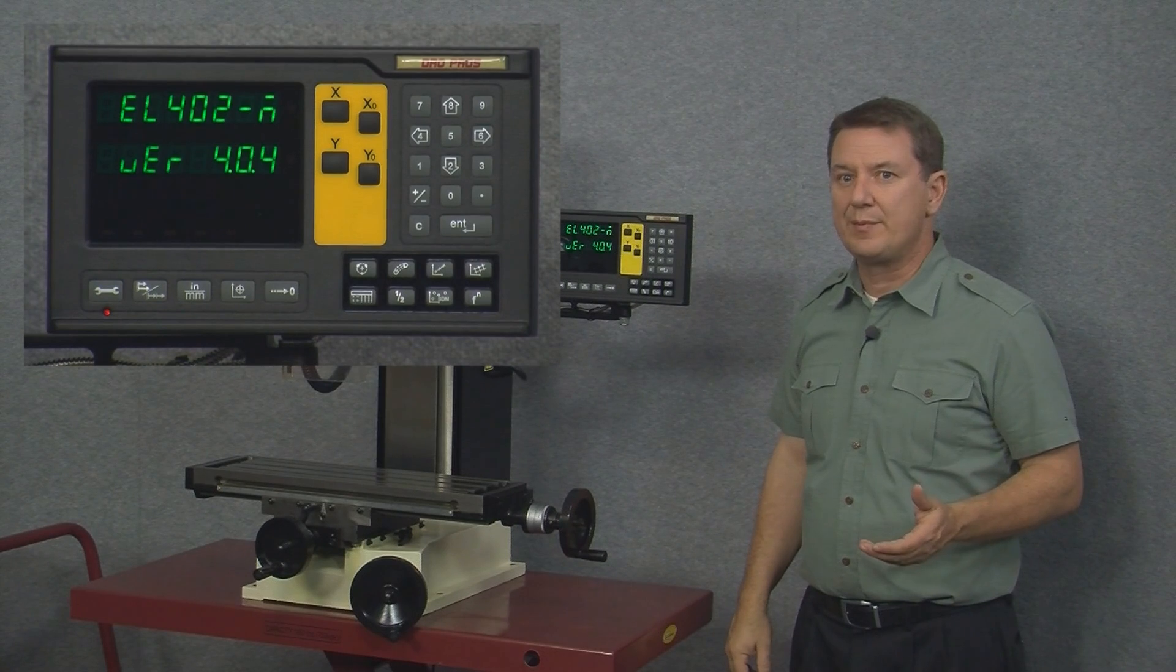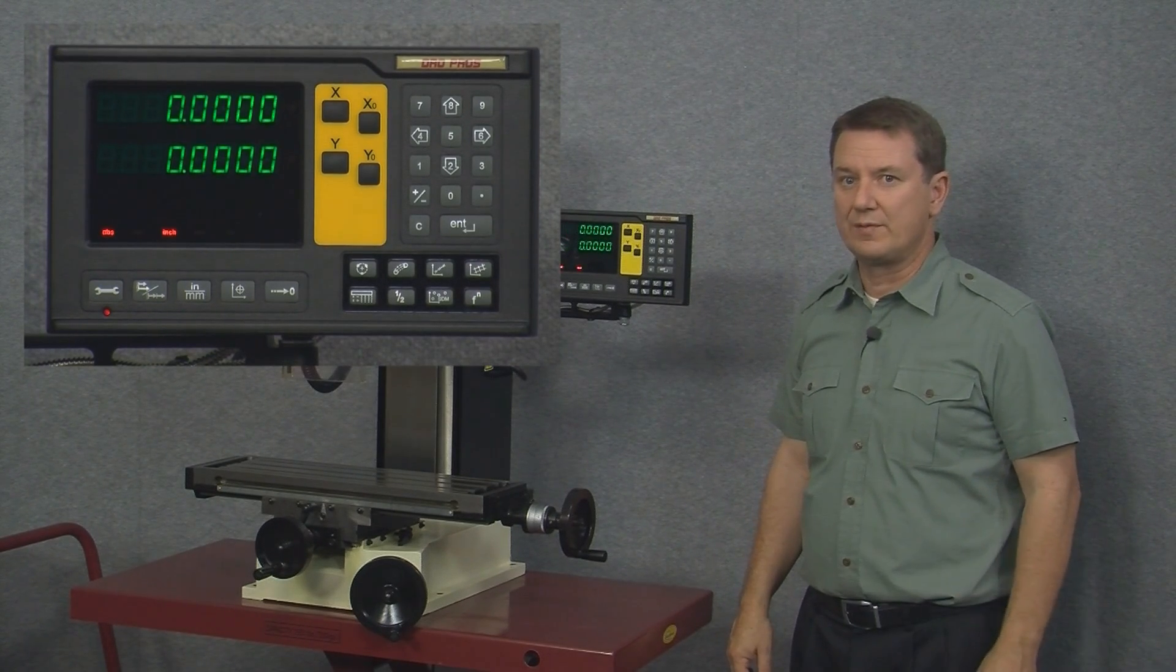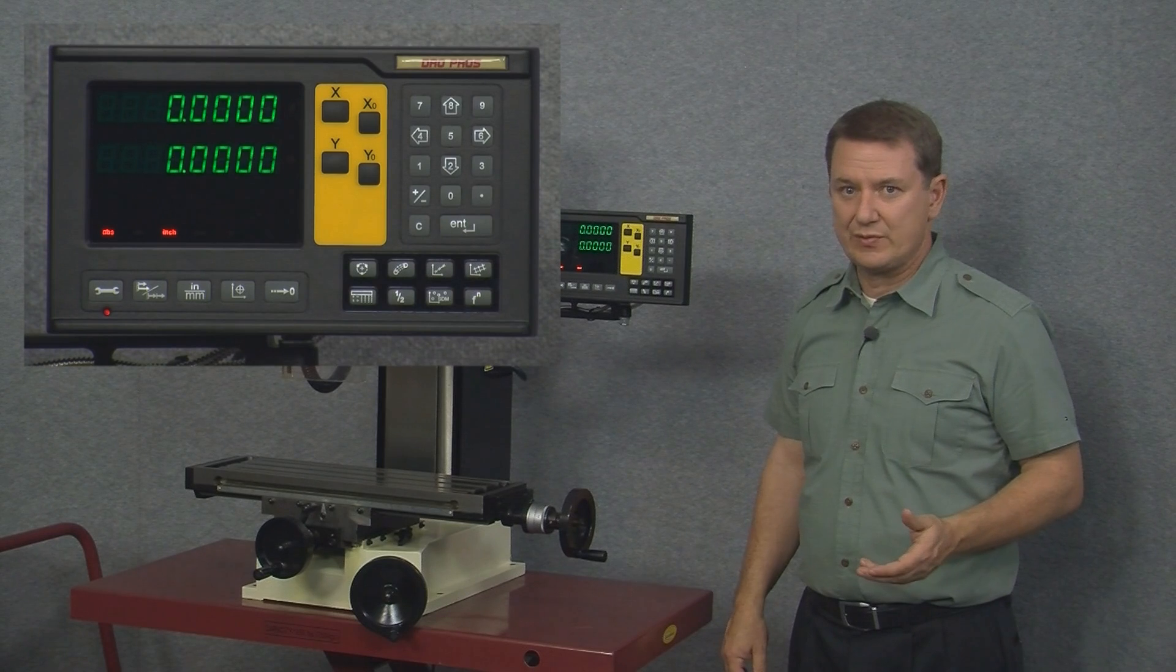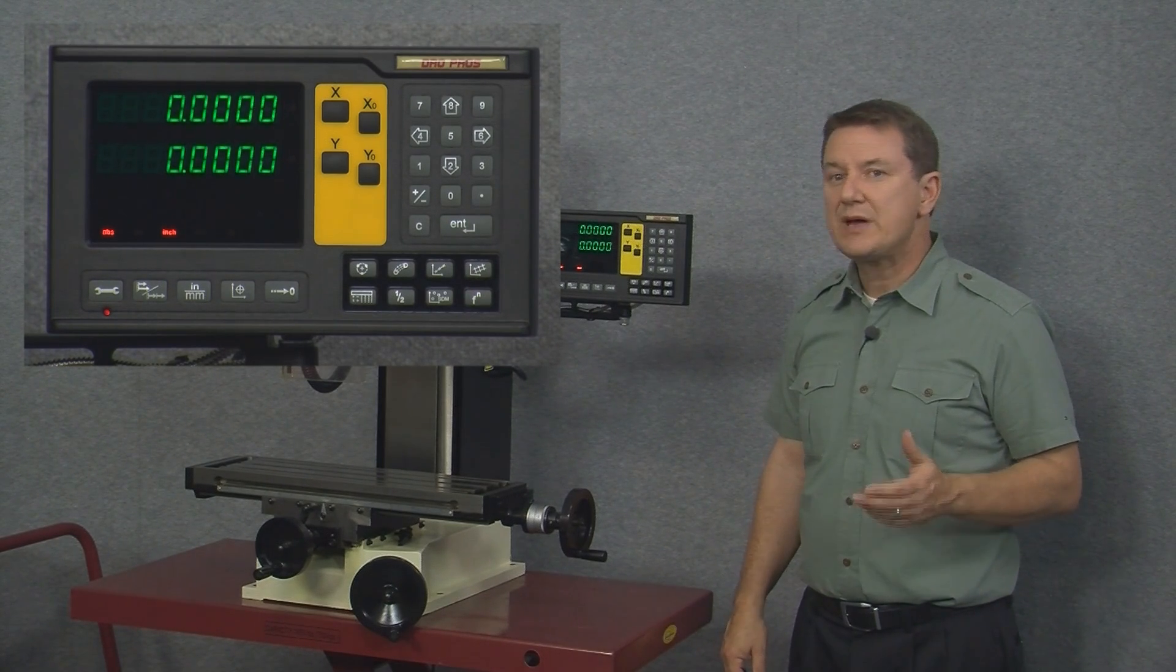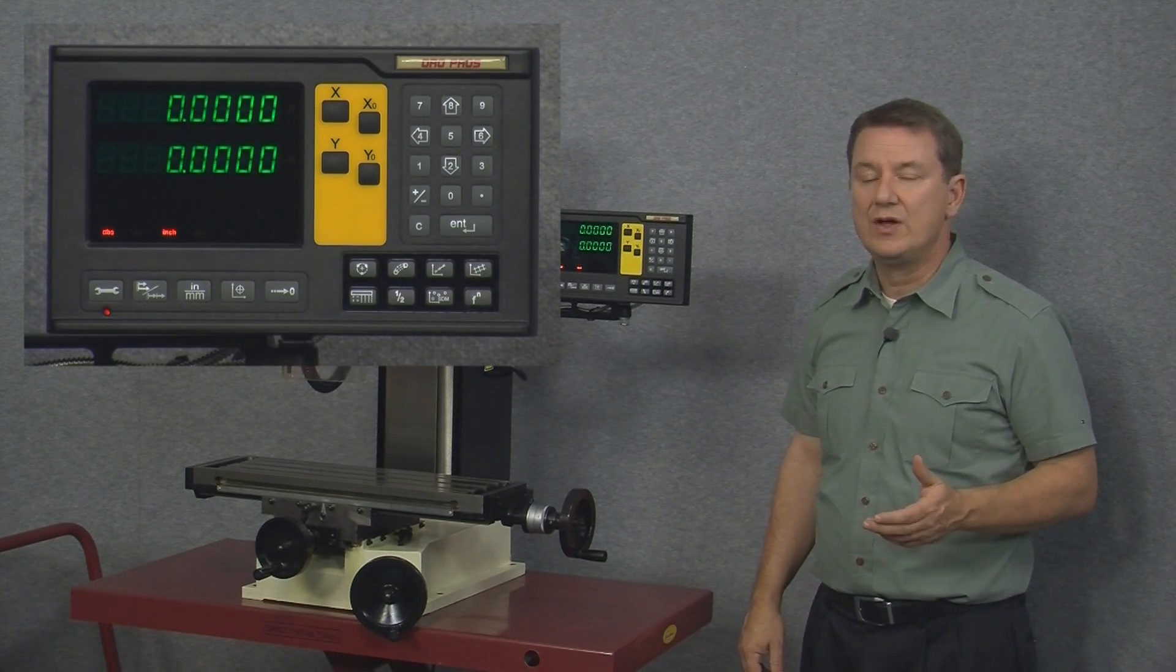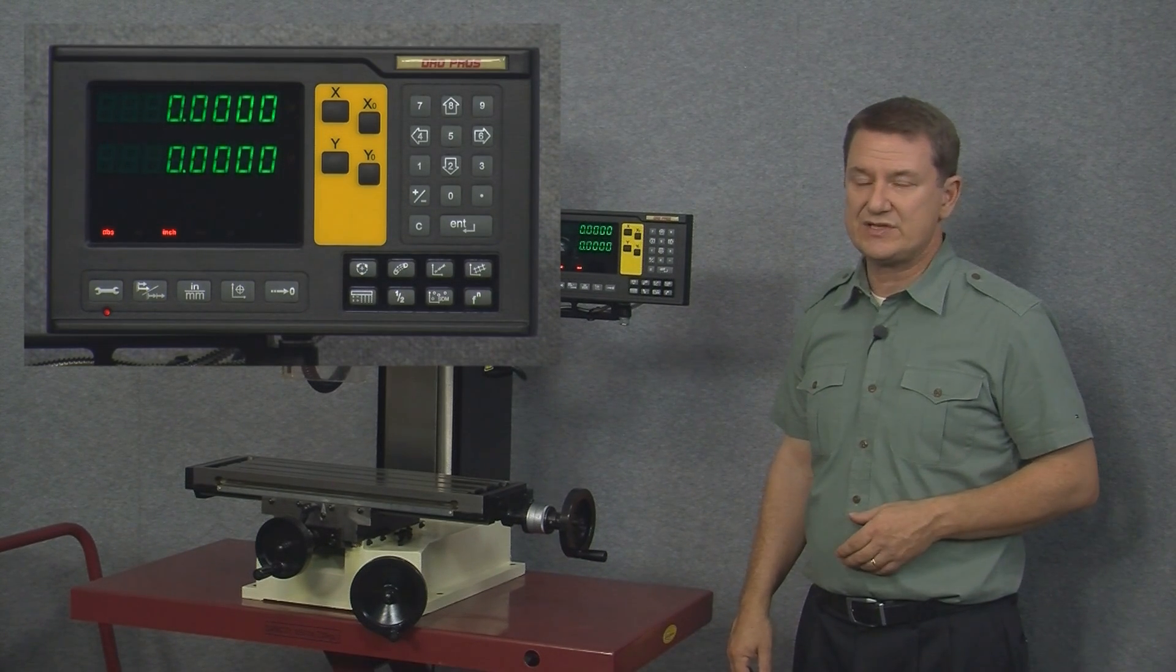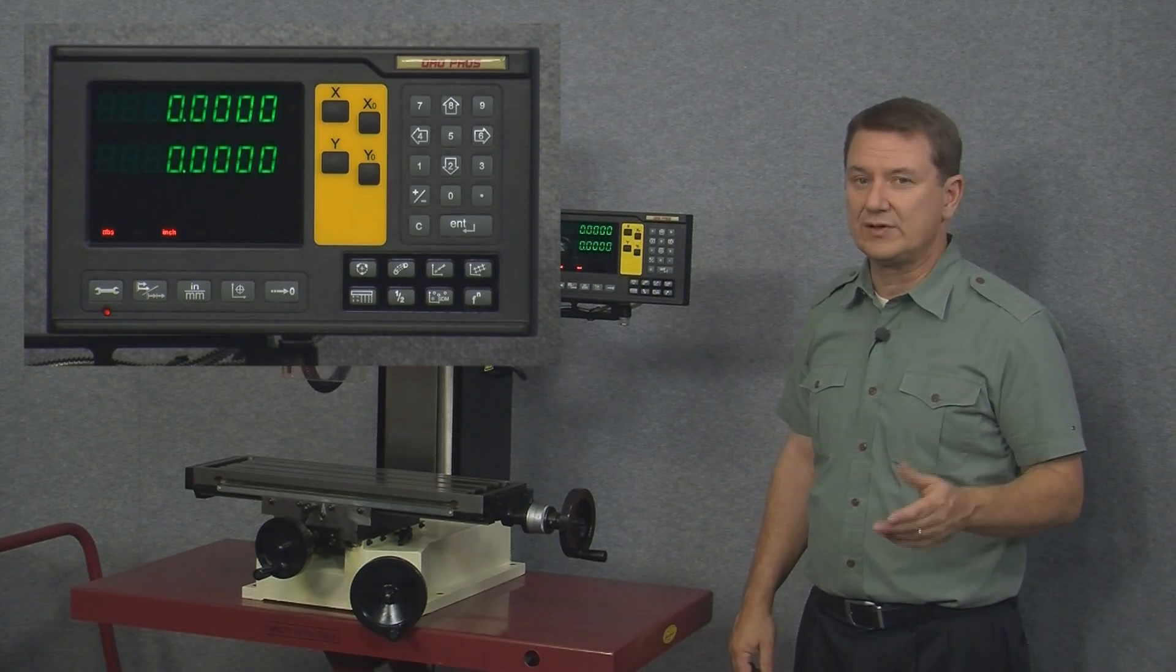And as the display starts up, it first shows us the version number of the installed software. And here is the main working screen. Now, both axis readouts should be rock steady. None of the numbers should be flickering. Especially if the last two digits of any axis are flickering, what that indicates is that the reed head and the scale were not installed with the hash marks on the same side. So let's go ahead and see exactly what that would look like.